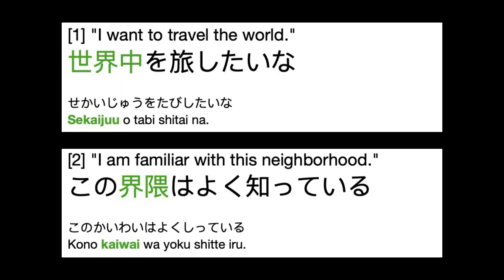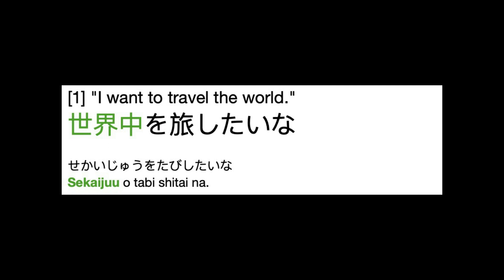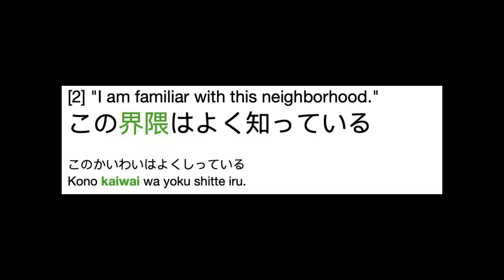So, where do we find this kanji used? Here are two examples. You will shortly hear the Japanese for each, with the second and third repeats spoken slowly. 世界中を旅したいな。この界隈はよく知っている。